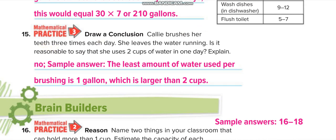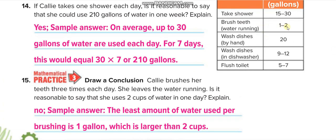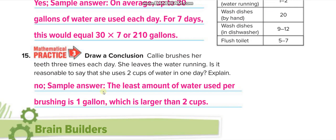Kelly brushes her teeth three times each day and leaves the water running. Is it reasonable to say that she used two cups of water in one day? It's reasonable if she brushed her teeth without running water, but with running water, you see it's one to two gallons. If we choose the minimum, one gallon, even that is more than two cups.